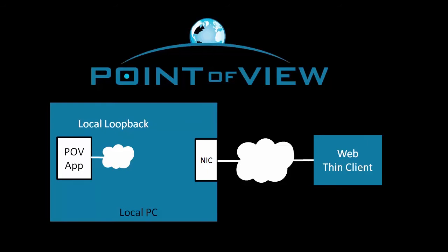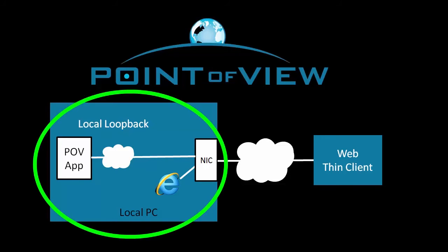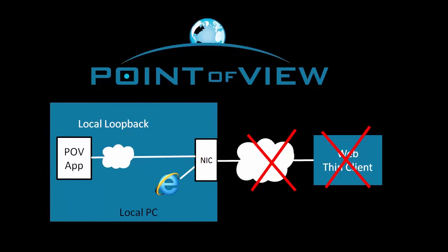Next, we'll do the exact same thing, but this time we'll use the actual IP address of the runtime machine. We are still local so no network hardware is involved, but we are using network addressing and this PC's network adapter driver and hardware. So now we know we can access the Point of View app via networked IP addressing.